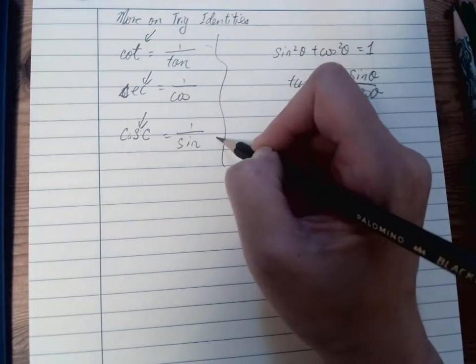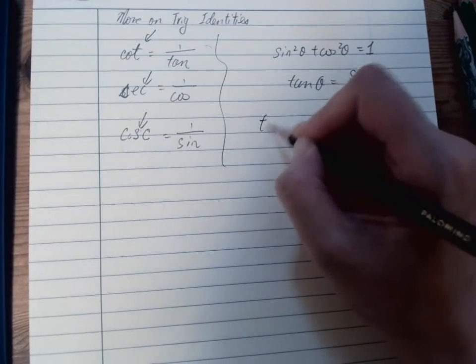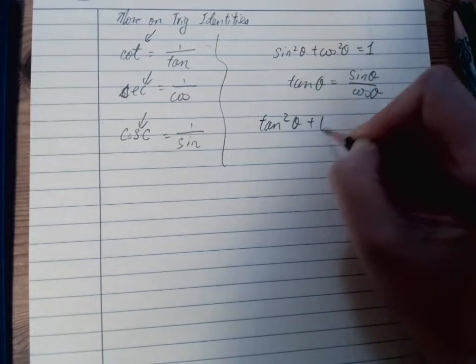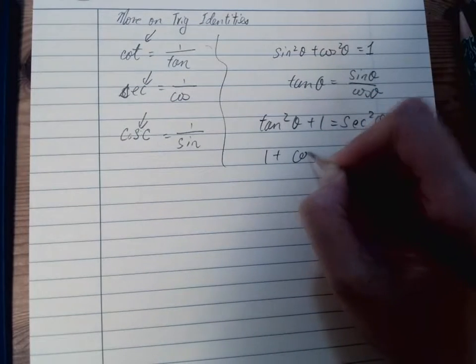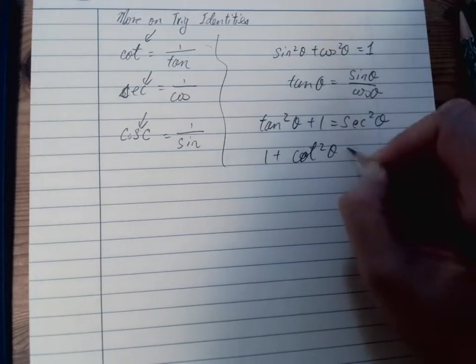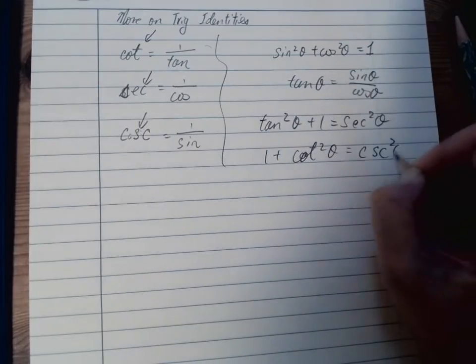And because of those reciprocal functions, you will have to know tan squared theta plus 1 equals to sec squared theta, and 1 plus cot squared theta equals to cosecant squared theta.